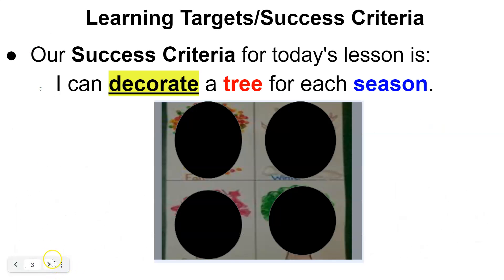Our success criteria for today's lesson: I can decorate a tree for each season. You're going to get a piece of paper that has tree branches and then you're going to decorate it to look like each season.